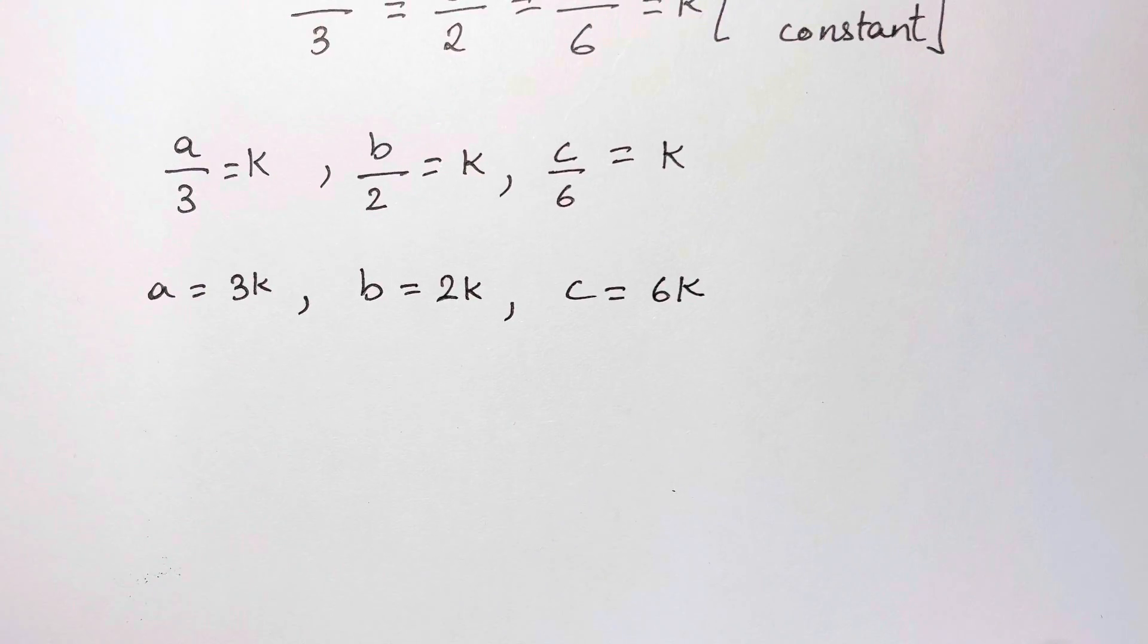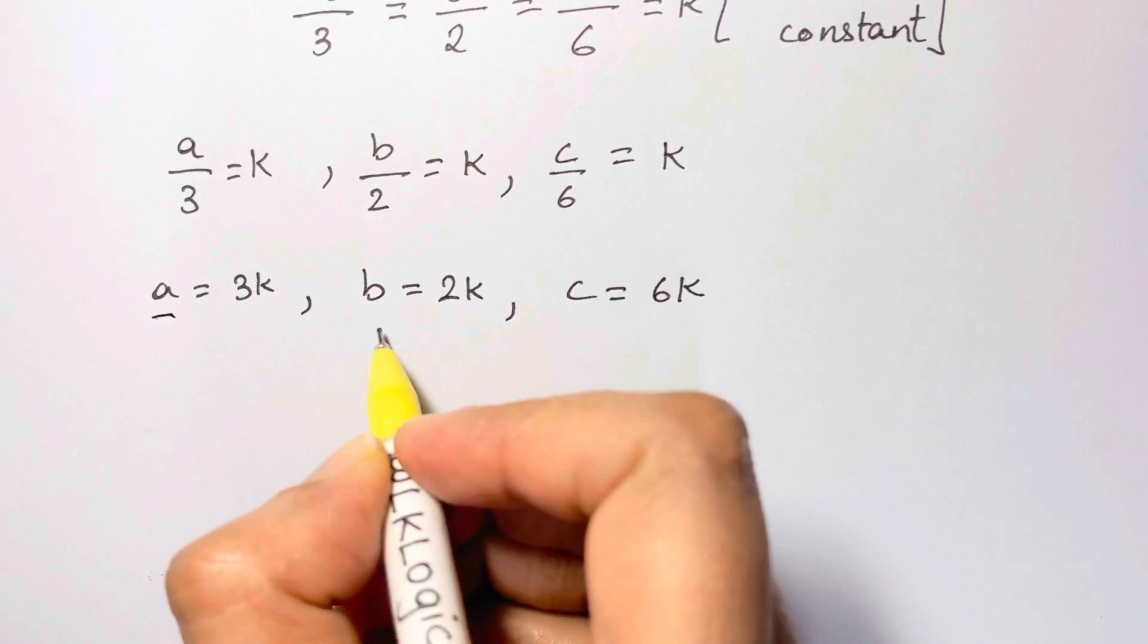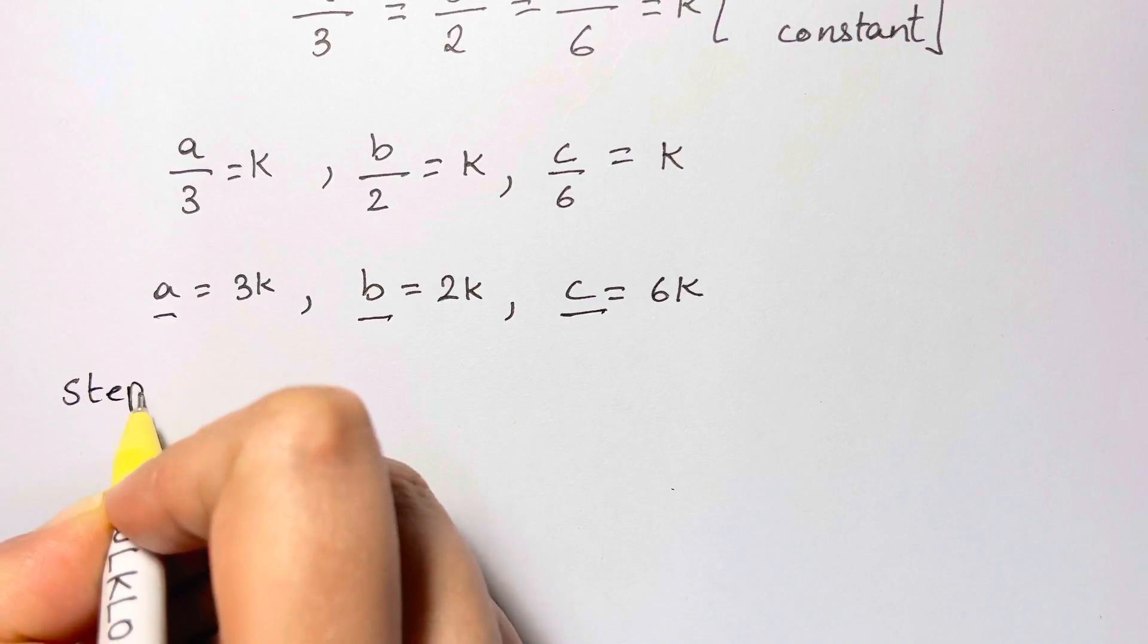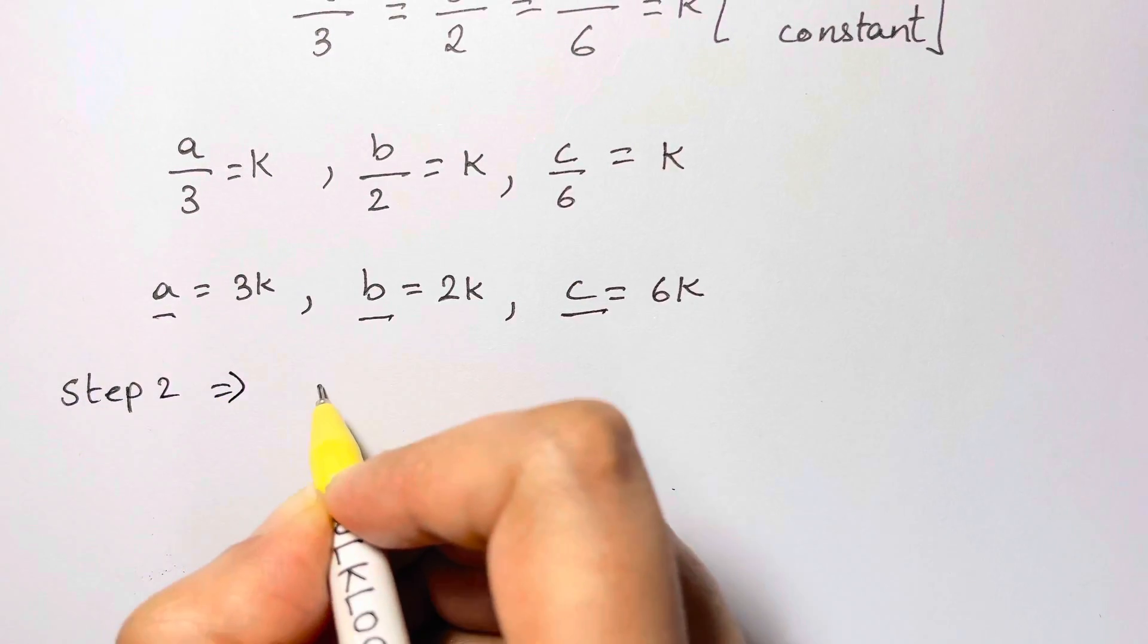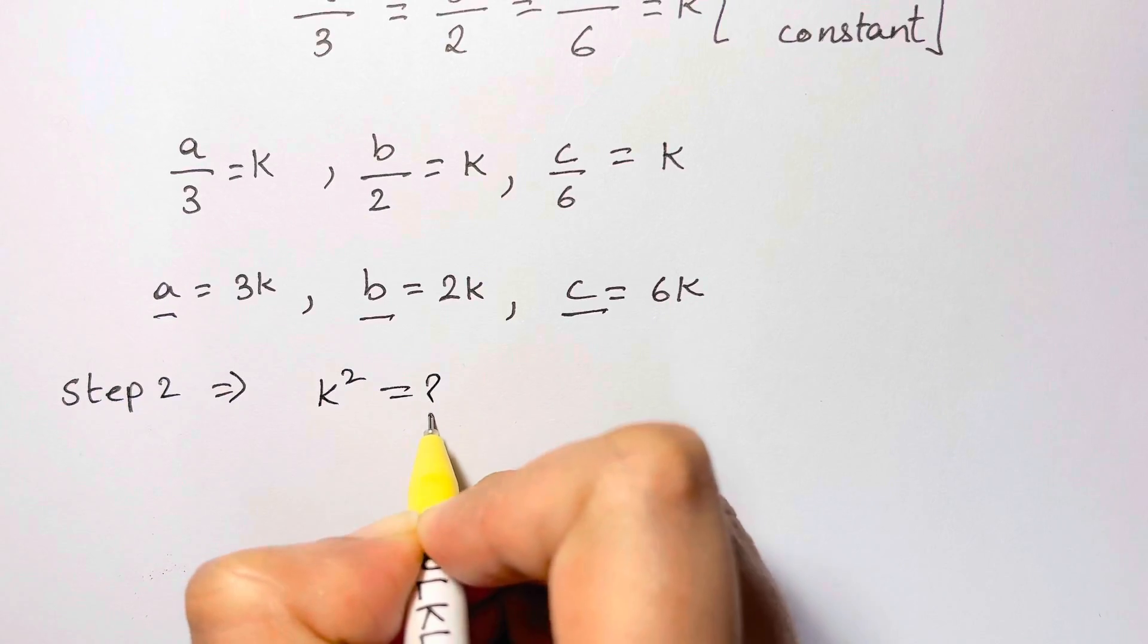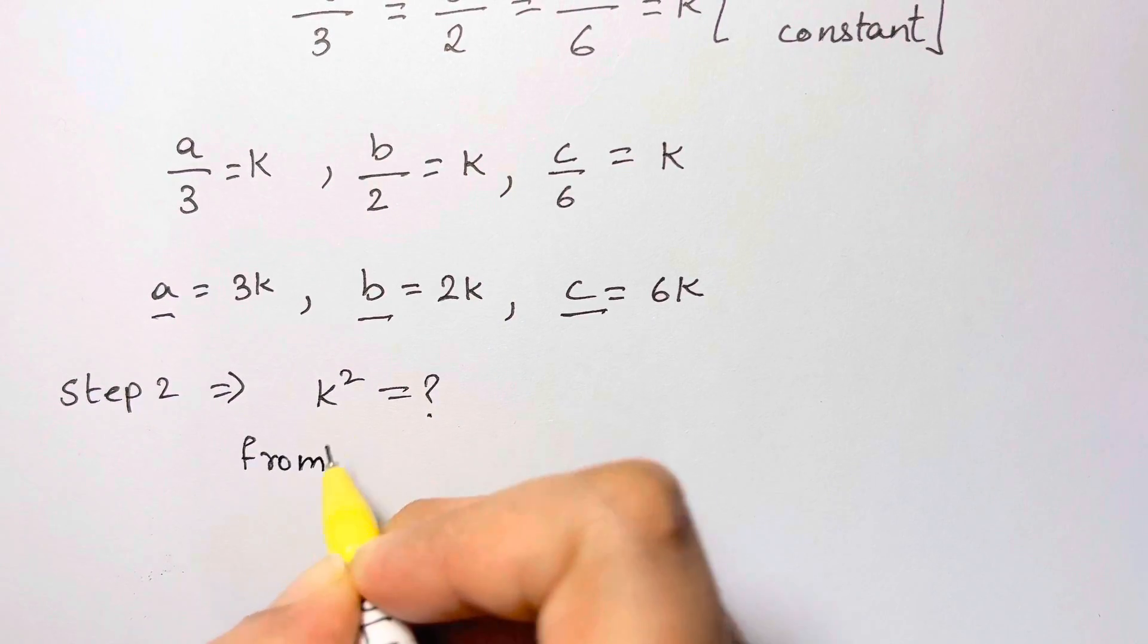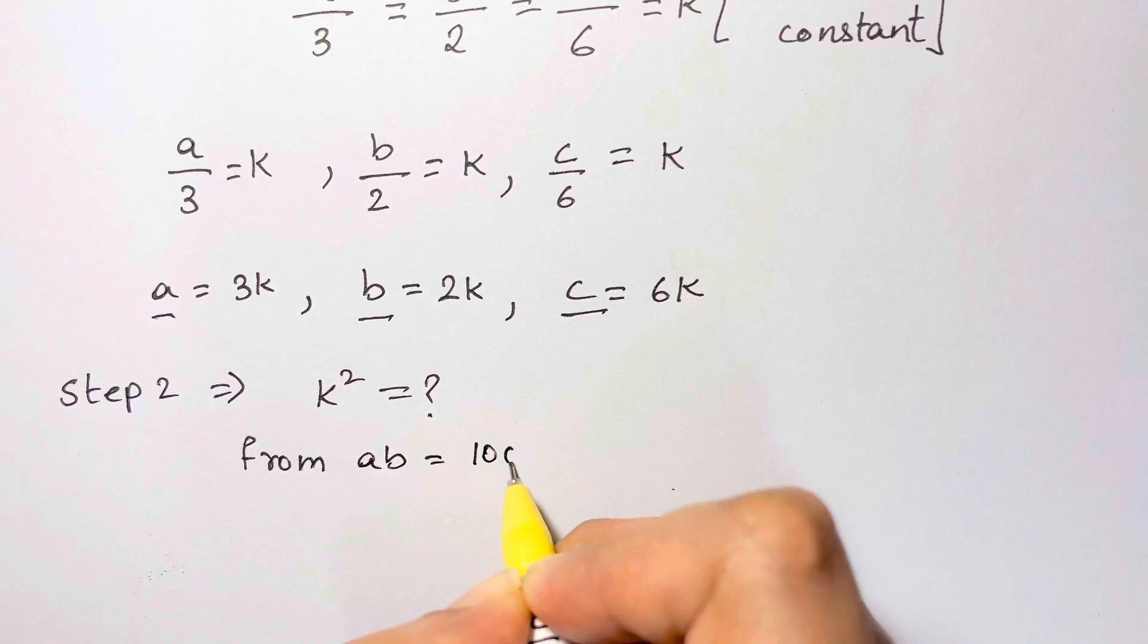Now, what's the second step? We have found the values of a, b, and c. So in step 2, we're going to find the value of k². How can we find it? From the question, we have ab is equal to 1000.